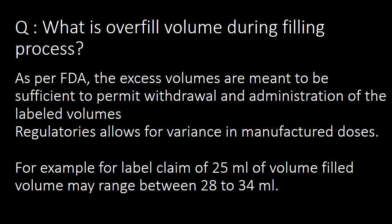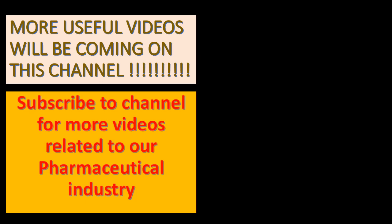Last question: what is overfill volume during the filling process? As per FDA, the excess volumes are meant to be sufficient to permit withdrawal and administration of the labeled volumes. The regulatory allows for variance in manufactured doses — for example, for a label claim of 25 ml, the filled volume may range between 28 to 34 ml. Subscribe to the channel for more videos related to the pharmaceutical industry.